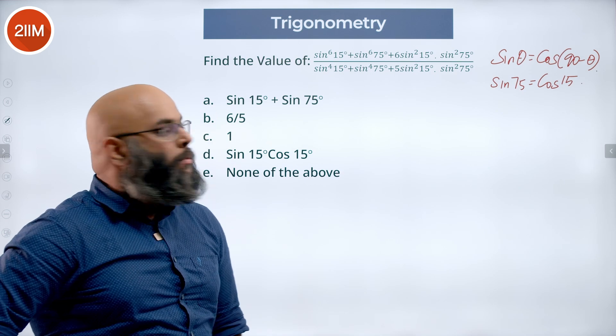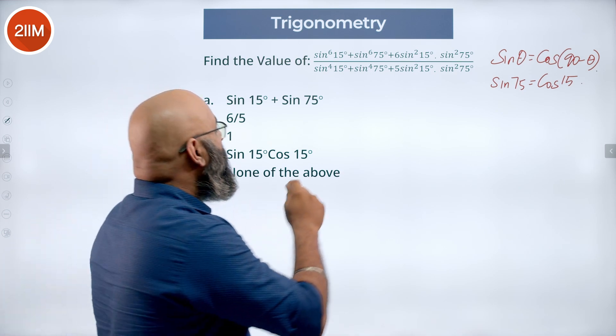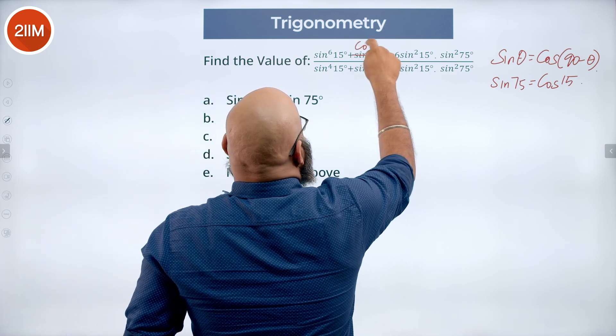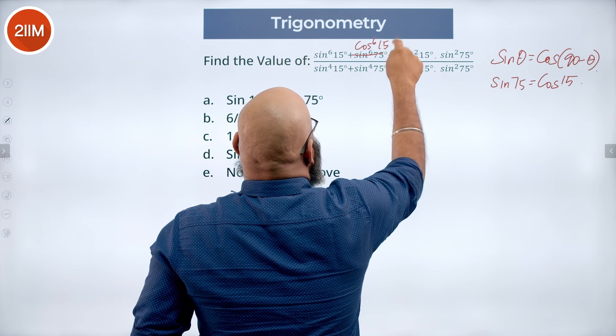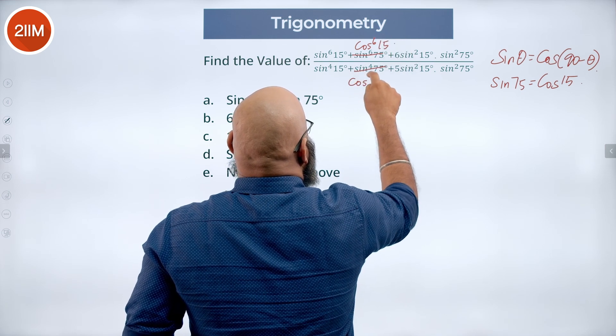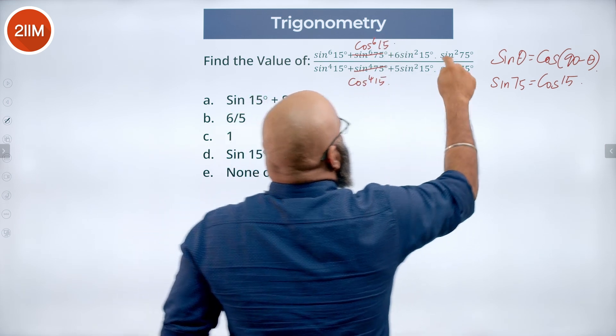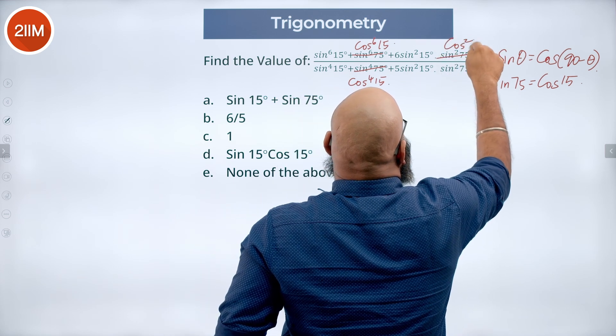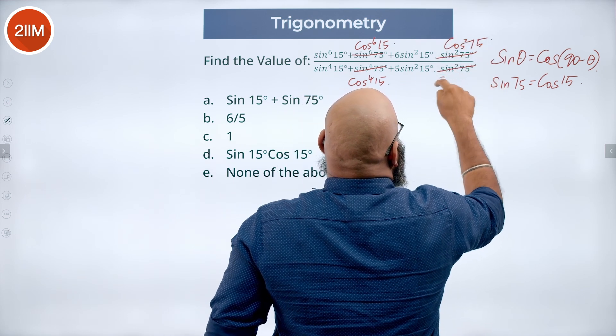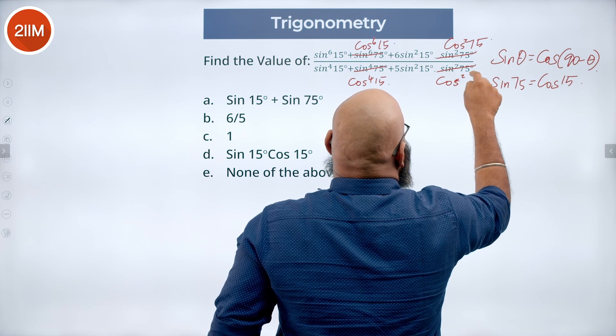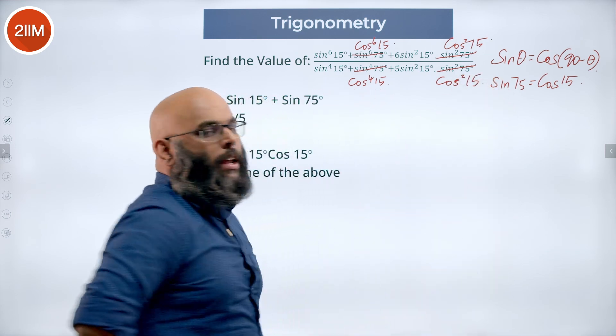So all these sin 75 degrees we can rewrite that as cos power 6 15, cos power 4 15, this is cos square 15 and this is cos square 15 again. Let's rewrite them all.